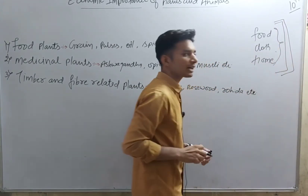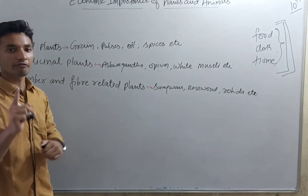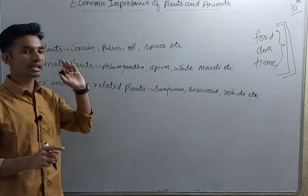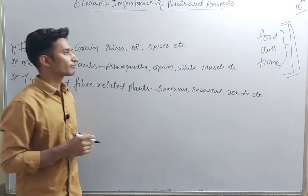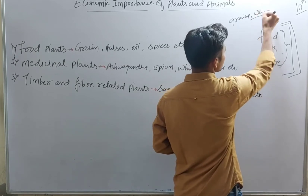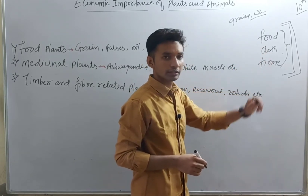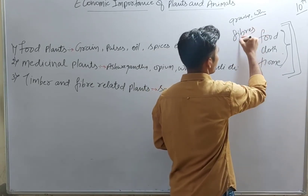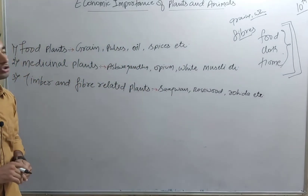How do we find these three components? They all have one source. We have many types of food, many types of cloth, and many types of home designs — all depend on one source: plants. Food comes from plants like grains and wheat. Cloth comes from fibers, which are also obtained from plants.